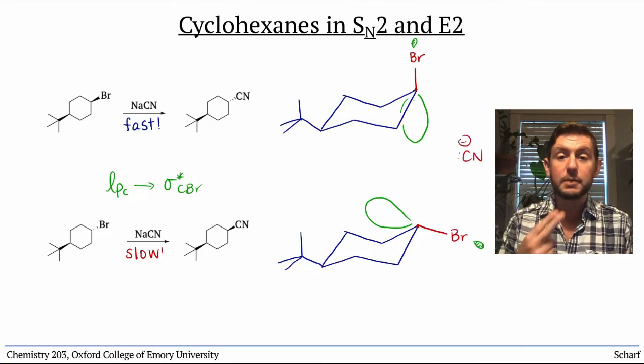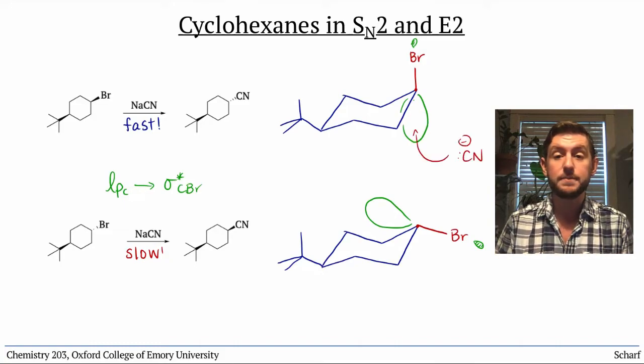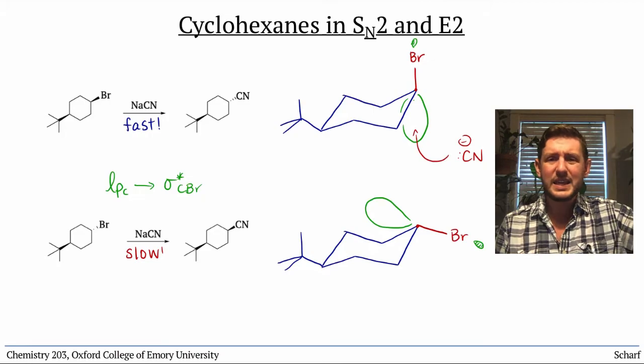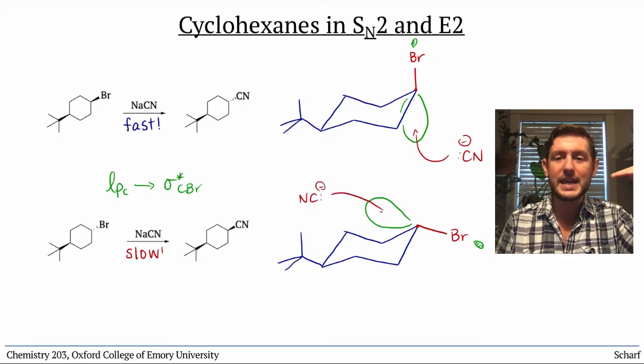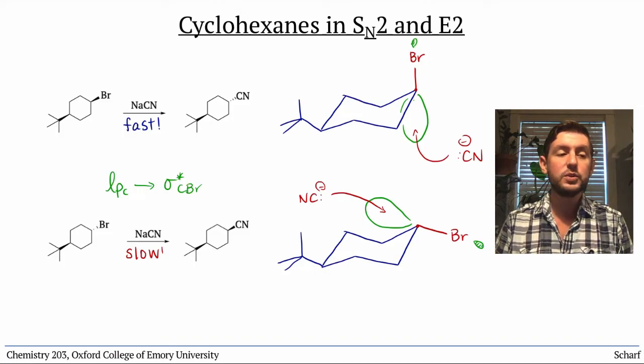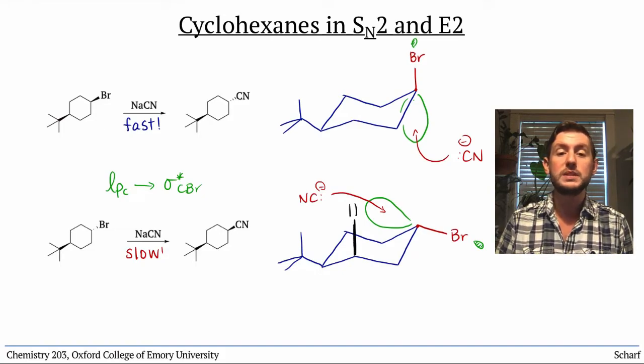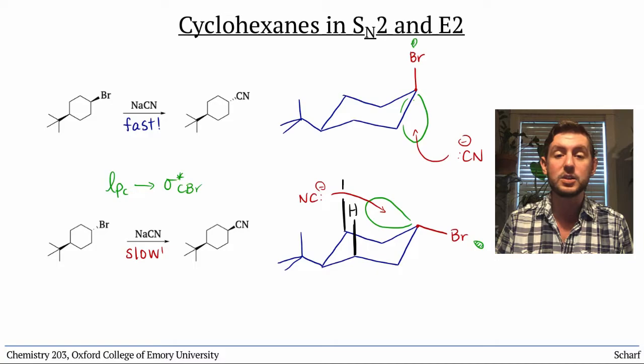But with the equatorial bromine, the cyanide would have to approach like this, almost like a plane landing across the runway of the cyclohexane ring. As the nucleophile approaches, it would have to pass directly between the two substituents on the ring at these locations.